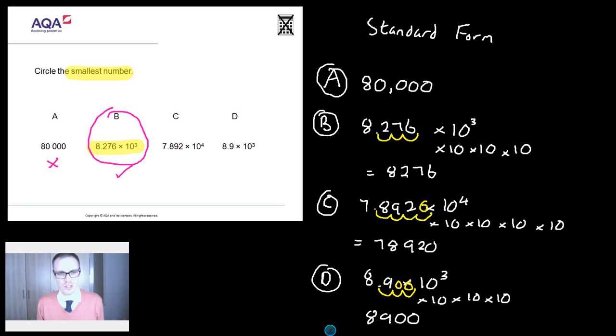What about C? C is an interesting one. Why might you pick C for the smallest? Well, I reckon you pick C because this number here, 7.892, that's smaller than all the other start numbers. Smaller than 8.276, smaller than 8.9. So if you're just looking at this start number, you're going to pick it. But of course, we all know this four is going to be important as well.